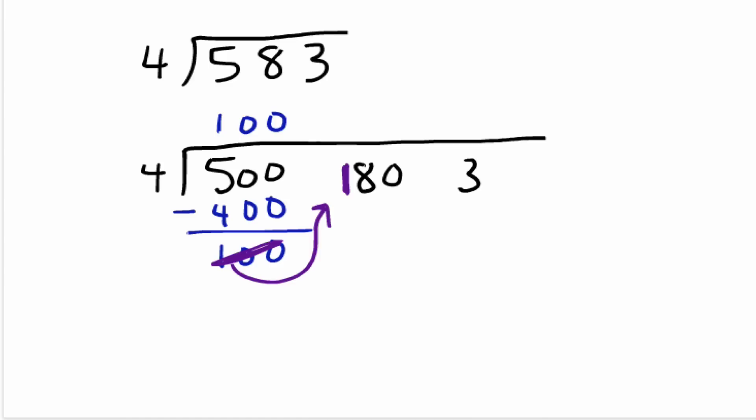And in this case, I know that 4 times 4 is 16, so that means 4 times 40 is going to give us 160. So I subtract, and I get 20 left over.